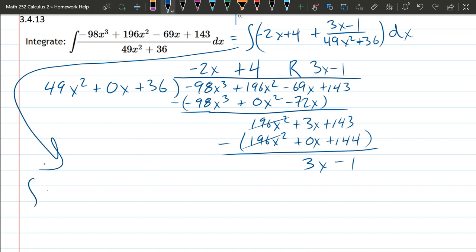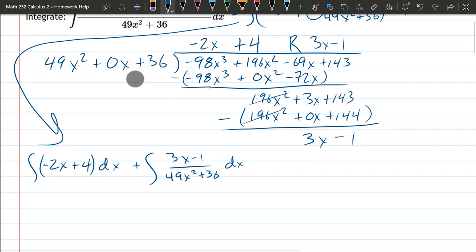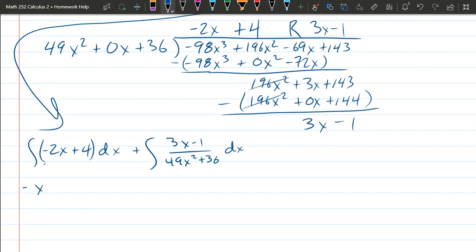So we have integral negative 2x plus 4, I'm splitting this across the addition right here into two separate integrals. The first integral on the left, super easy. Negative x squared plus 4x. You can just check it and see that it's correct. Derivative of x squared is 2x, your negative makes it negative 2x. Derivative 4x is 4, no problem. There is a plus constant, and what I always do, I just wait till my last integral and then I write my plus constant after that.